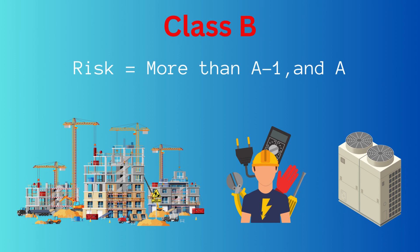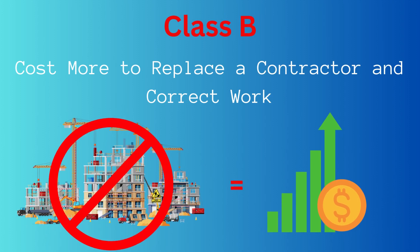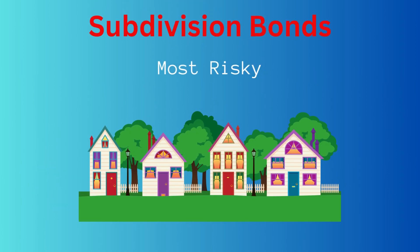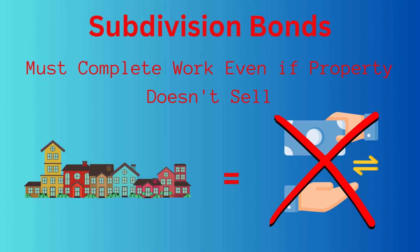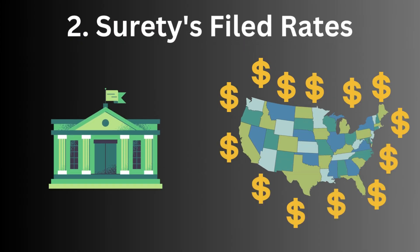Class B is considered more risky than class A. Class B construction includes MEP, general construction, and others. From a surety perspective, this carries more risk because a default will likely cost the bond company more — a new contractor will charge significantly more than the bonded contractor to complete the contract, and work may also need to be torn out and corrected. Completion bonds or subdivision bonds are considered the most risky, because these bonds require the contractor and surety bond company to complete a contract even if payment is not received.